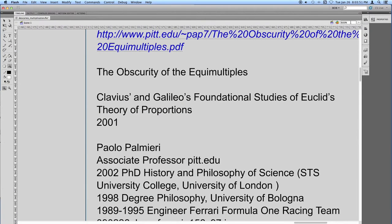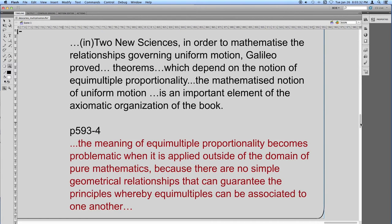Galileo published his dialogue on two new sciences at about the same time, using variations on Euclidean proportion theory. And here Paolo Palmieri indicates some limitations of that mathematical system, as applied to physical quantities.